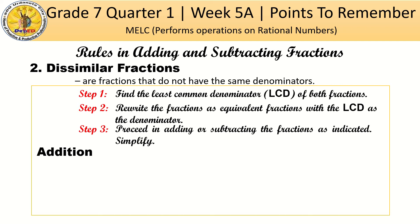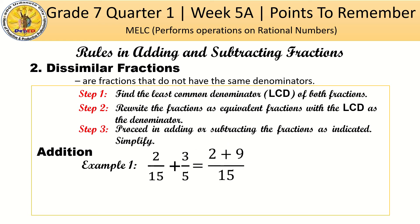Let's have the addition example. Example number 1: 2/15 plus 3/5. The LCD is 15. So 15 divided by 15 is 1, times 2 equals 2. Then, copy the operation — plus. 15 divided by 5 is 3, times 3 equals 9. Then proceed in adding: 2 plus 9 equals 11 over 15. If it can't be reduced to lowest terms, then that's the answer.